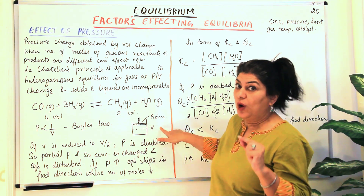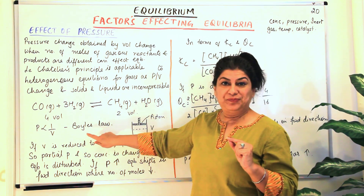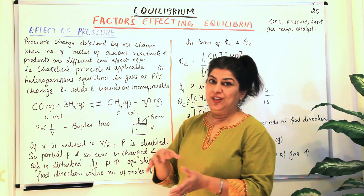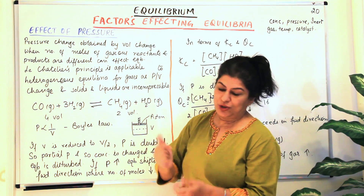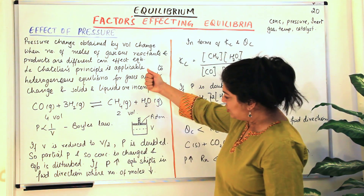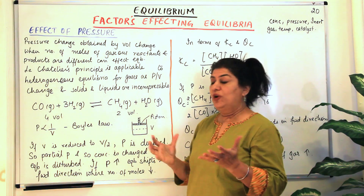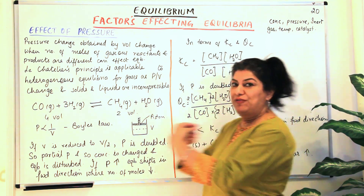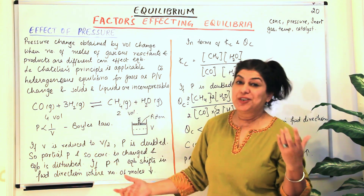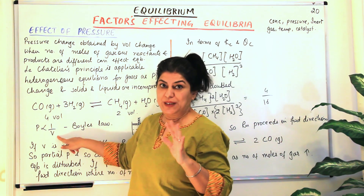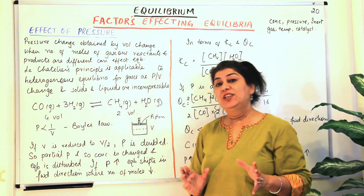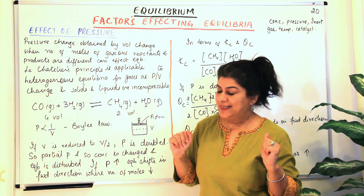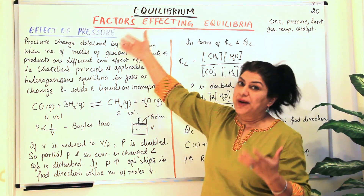So why am I talking of volume? Because volume is related to pressure according to Boyle's law. The pressure is inversely proportional to volume — as you increase the pressure the volume goes down, and if the volume increases the pressure goes down. When I brought the volume to half, the number of molecules per unit volume doubled, the concentration became doubled, and therefore the number of molecules hitting the walls also doubled, and hence the pressure doubled. So this is how we bring about a change in pressure by changing the volume of the vessel in which a chemical equilibrium has been established.